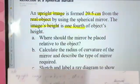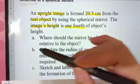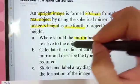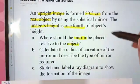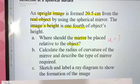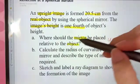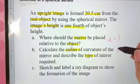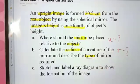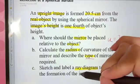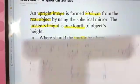Now, where should the mirror be placed relative to the object? So this is asking about the object distance. And then the second question is to calculate the radius of curvature of the mirror and state the type of mirror. And also, the next thing — he asks to draw a ray diagram to show the formation of the image.